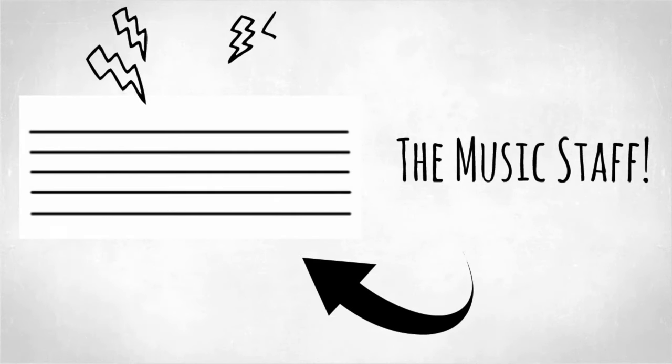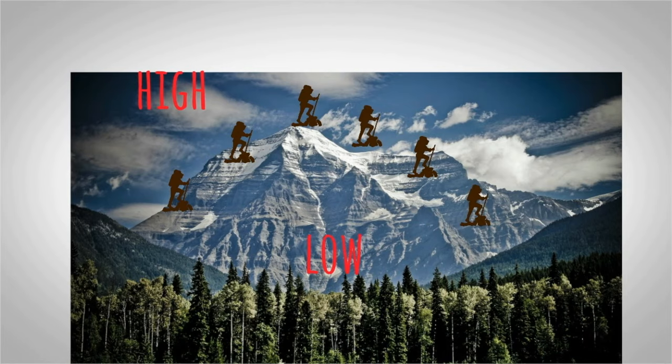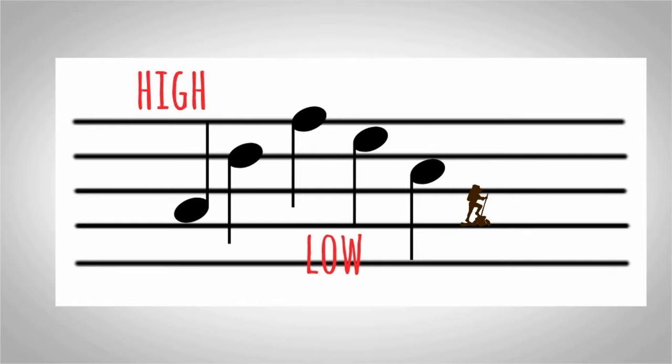Five lines and four spaces. But speaking of climbing mountains, notice how the mountain climber starts low on the mountain, and then climbs high and then back down low. The music staff is a lot like a mountain. It has low and high points where music notes can hang out.